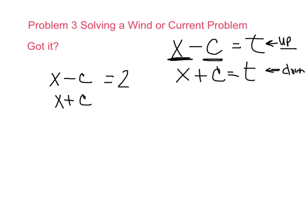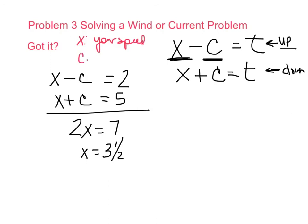Downstream, X plus C is going to give you 5. Right off the bat, we look at this and we say, oh, I can do addition method. Add them together. 2X equals 7. Divide by 2, X equals 3 and a half. Now what does X stand for? And this is why it probably would help at the very beginning if you put X equals your speed. That's like in still water. That's without any current. C is pretty easy. That's current, because we let it be C.